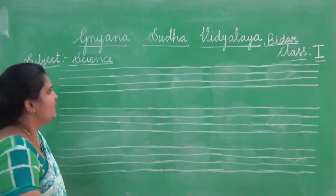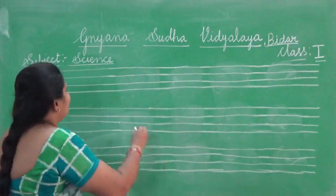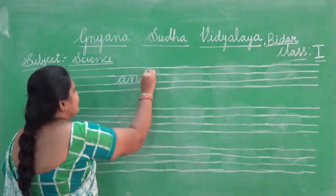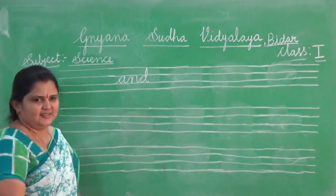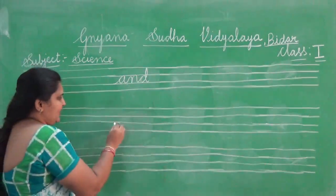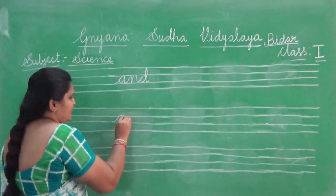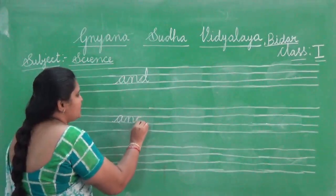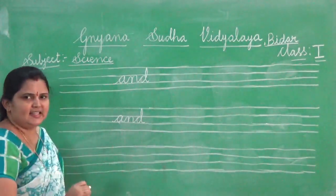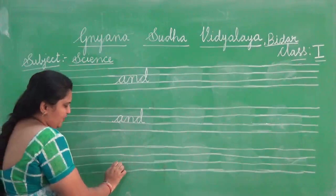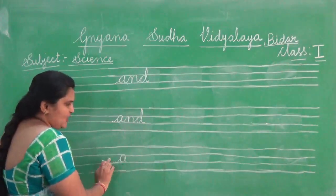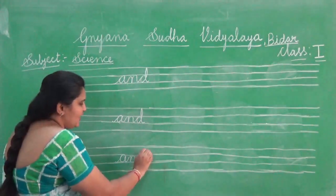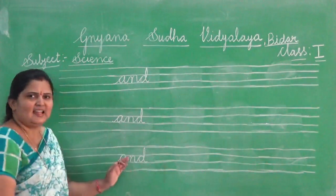Next one is a three letter word. Look at the board. A, N, D. D — you are going to touch the upper line. A, N, D — and. Once again I repeat. Look at the board. A — you are going to write it in between two lines only. N also between two lines. And D — you are going to touch the upper line or the first line. A, N, D — and.